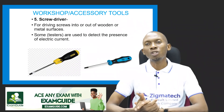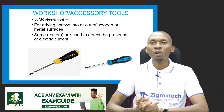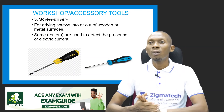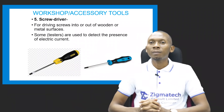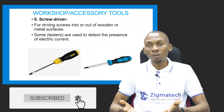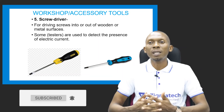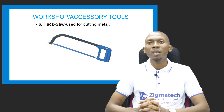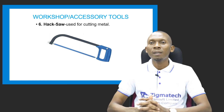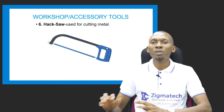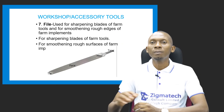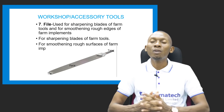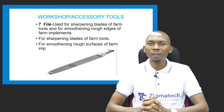We have the screwdriver, which from its name is used for driving screws into or out of wooden or metal surfaces. Some are also used to detect the presence of electrical current. The hacksaw is an accessory tool used for cutting metal. The file is used for sharpening the blades of our farm tools and for smoothing the rough edges of farm implements.